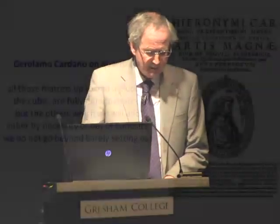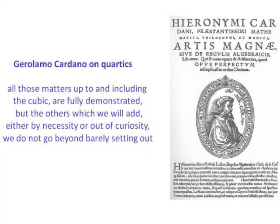However, in 1542 Cardano learned that the original discovery of Tartaglia's method had been due to del Ferro, and he felt free to break his oath. His brilliant colleague Ferrari had meanwhile found a general method for solving quartic equations — by reducing the quartic to solving a cubic. Cardano published his Ars Magna — 'the great art' — containing methods for solving cubics and quartics and giving credit to Tartaglia. The Ars Magna became one of the most important algebra books of all time.